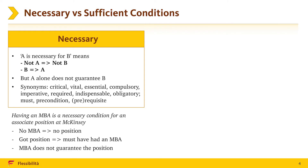Let's consider this hypothetical statement, which is of course not 100% true in reality: having an MBA is a necessary condition for an associate position at McKinsey. Based on this statement, we can conclude that if you do not have an MBA, you will not become an associate at McKinsey. If you have an MBA, you might still not become an associate, probably because there are other factors at play. But if you got an associate position, you must have had an MBA. This is how necessary conditions work.